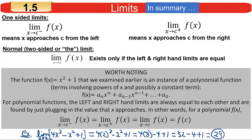So when calculating limits for polynomial functions, you don't have to go through the torturous process of plugging in values from the left and right — you can just plug the value in and that's the answer. For example, the limit of 4x³ − x² + 1 as x approaches 2: instead of making charts from left and right, just plug 2 into the polynomial and that's your answer. It saves a lot of work.